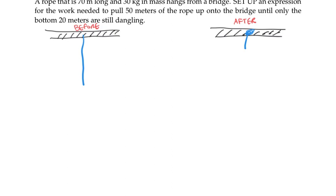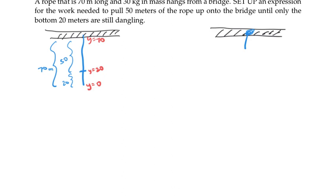It's also possible to set up this integral using a variable y, where y equals 0 at the bottom of the rope. In that case, the bottom 20 meters goes up to y equals 20, and the top 50 meters are from y equals 20 to y equals 70. There's not that much that changes — I'm using y now instead of x, so my length of my little chunk of rope is delta y, and my mass of any chunk is still (3/7) times delta y, and my force on a little chunk is (3/7) delta y times 9.8.